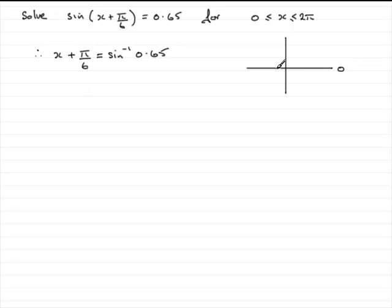Now in the usual way this would be 0, 0 radians in this case, this is pi upon 2 radians, pi radians, 3 pi upon 2 radians, and 2 pi radians, so we're turning in an anti-clockwise sense.